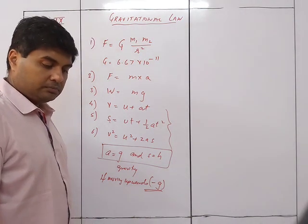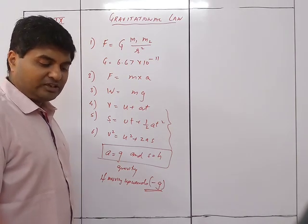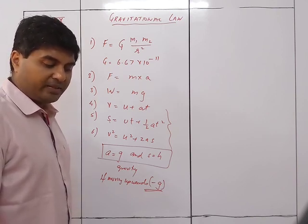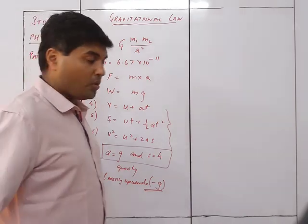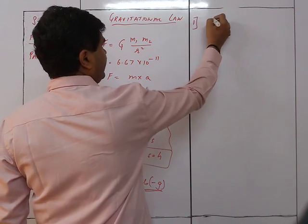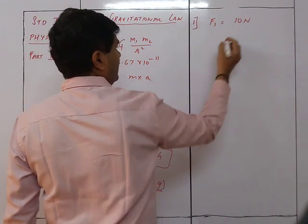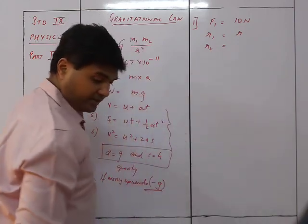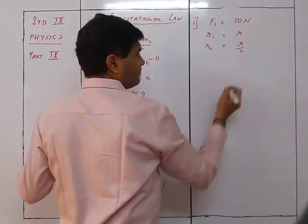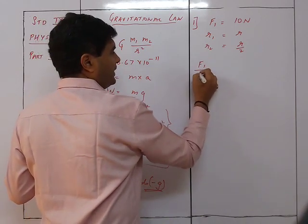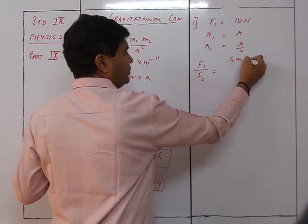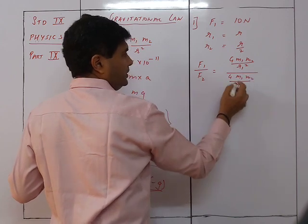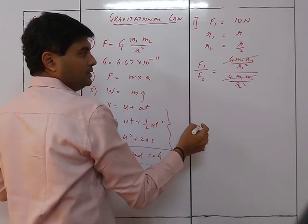Question 1: The force of attraction between two bodies at a certain separation is 10 newton. What will be the force of attraction if the separation is reduced to half? Given: F₁ = 10 N, r₁ = r, r₂ = r/2. We use the ratio F₁/F₂ = (G·m₁·m₂/r₁²) / (G·m₁·m₂/r₂²).